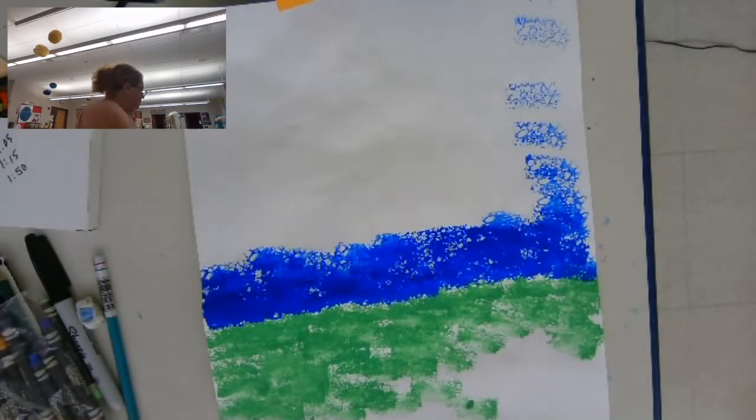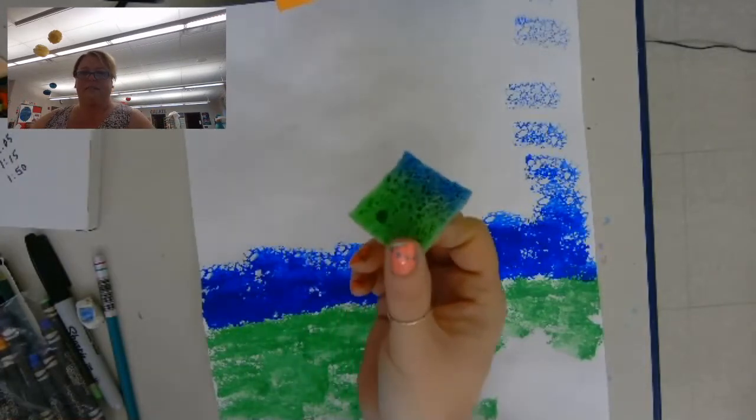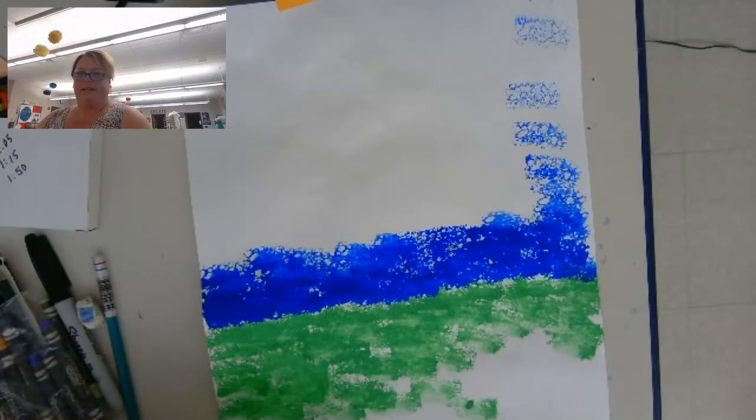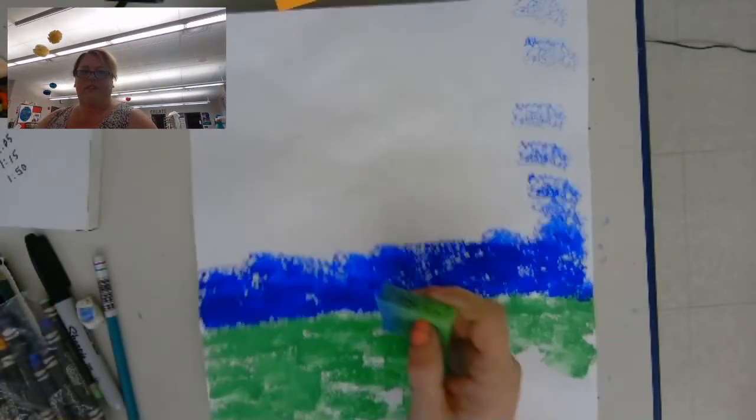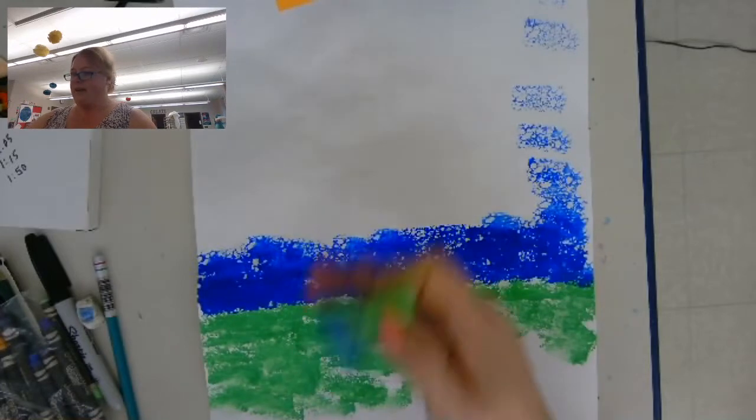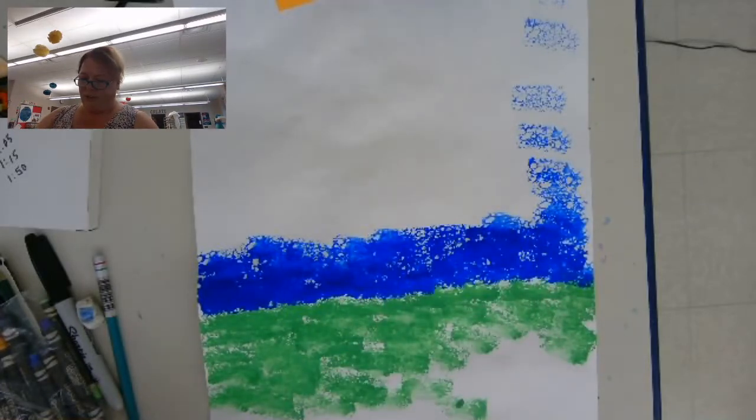All you need for sponge painting is a little piece of a sponge and some paint. And you're going to do half of the paper green and half of the paper blue. So I'm just going to show you how we're doing it at school.